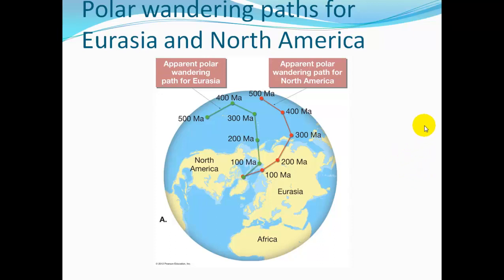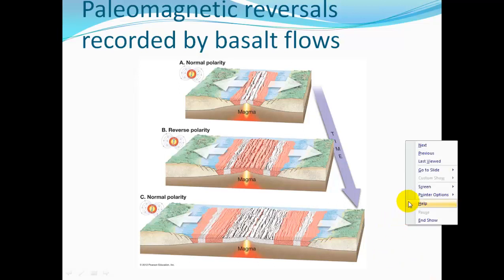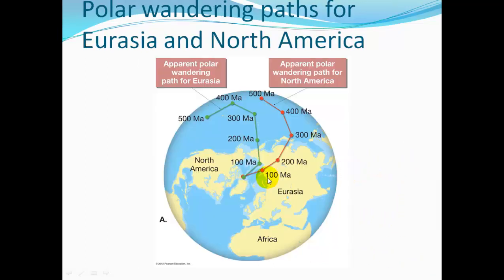If we take data from rocks and plot out where the North Pole was — from North America and from Eurasia — they form essentially parallel lines. But if we move the continents to fit them together, these lines converge and match up very closely, showing that during this time period the continents were pushed together forming Pangaea.